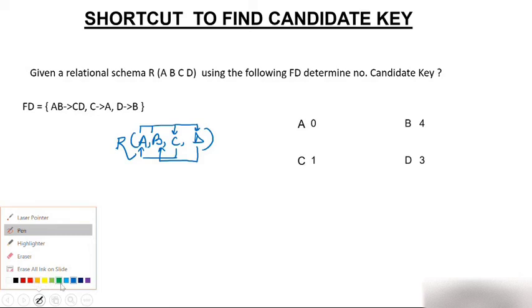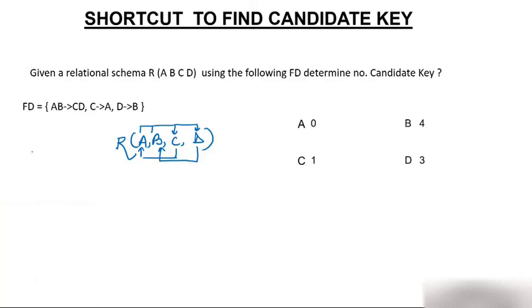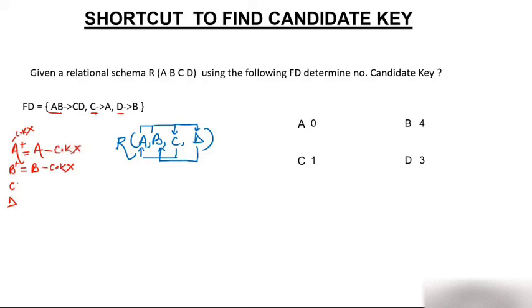When all attributes have incoming arrows, check each attribute individually. Closure of A: only A (no functional dependency applies with just A alone) — A is not a candidate key. Closure of B: only B — B is not a candidate key. Closure of C: C can determine A (using C→A), giving AC. But we cannot apply AB→CD (no B) or D→B (no D), so closure of C is only CA — C is not a candidate key.